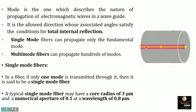Single mode fibre can propagate only the fundamental mode. Fundamental mode means only the bound mode, which passes through the axis of the fibre core. As you can see in the diagram, only the bound mode propagates through the optical fibre. Its core diameter is 3 micrometers, numerical aperture is 0.1, and the light wavelength is 0.8 micrometers.